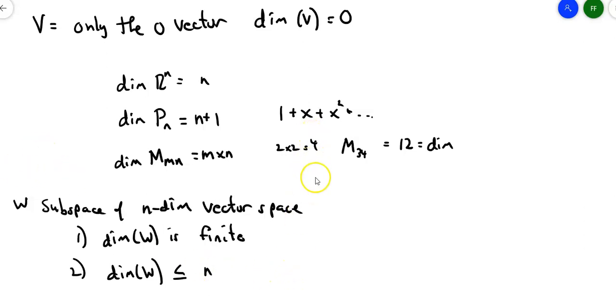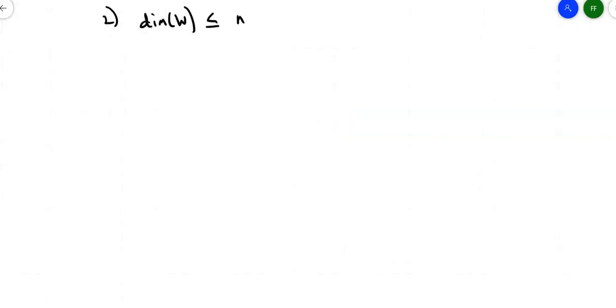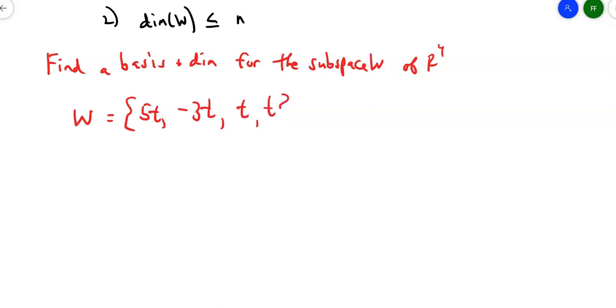Here's a question that might look a little funny looking. Turns out it's a really easy question to solve. So find a basis and the dimension for the subspace W of R4. Here's W. I've got (5T, -3T, T, T), where T is a real number. What's the basis? I can solve this by looking at it. The basis for W is (5, -3, 1, 1).